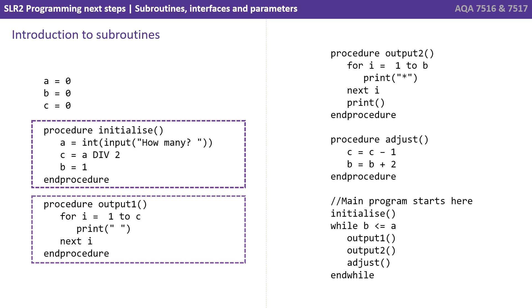So we have initialize, output1, output2 and adjust as our four procedures. And you can see where they end with the word end procedure.